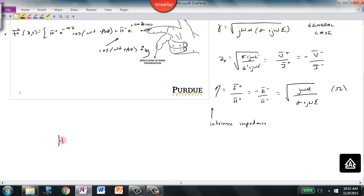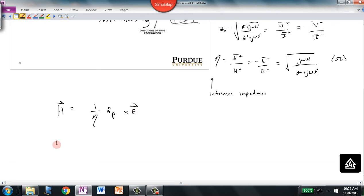These are very fundamental. The H field is equal to 1 over eta, A hat rho. And A hat rho is just the direction of propagation of the plane wave crossed with the E field.